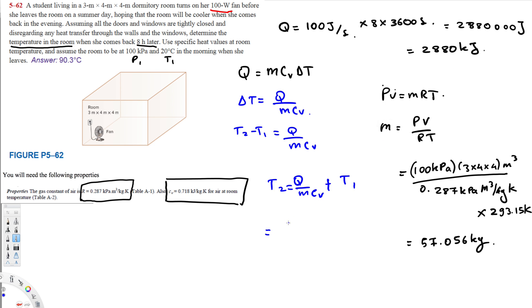Let's plug in all the values. We have Q, that's 2880 kilojoules, divided by m which is 57.056 kilograms, and then Cv is 0.718 kilojoules per kilogram kelvin, plus the initial temperature which is 293.15 kelvin. Now we have to make sure this kilojoule cancels. If you look at the Cv value, this kilojoule cancels, this kilogram cancels, and we get the answer in kelvin. If you add them together, you'll get 363.56 kelvin. This equals T2.